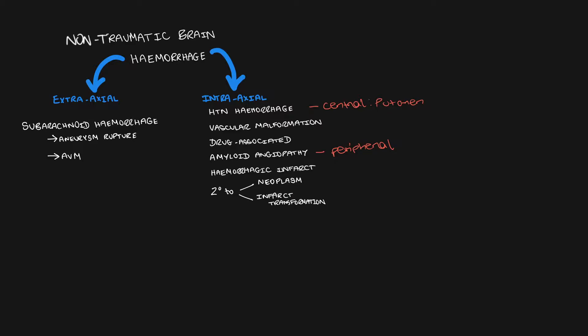Also, haemorrhagic metastases including thyroid, melanoma, choriocarcinoma, and renal cell carcinoma have to be considered. It can be quite difficult to distinguish between a primary intracranial haemorrhage and a secondary haemorrhage due to a neoplasm, but things that may help are enhancement and heterogeneity, which may suggest an underlying neoplasm rather than a straightforward primary intracranial haemorrhage.